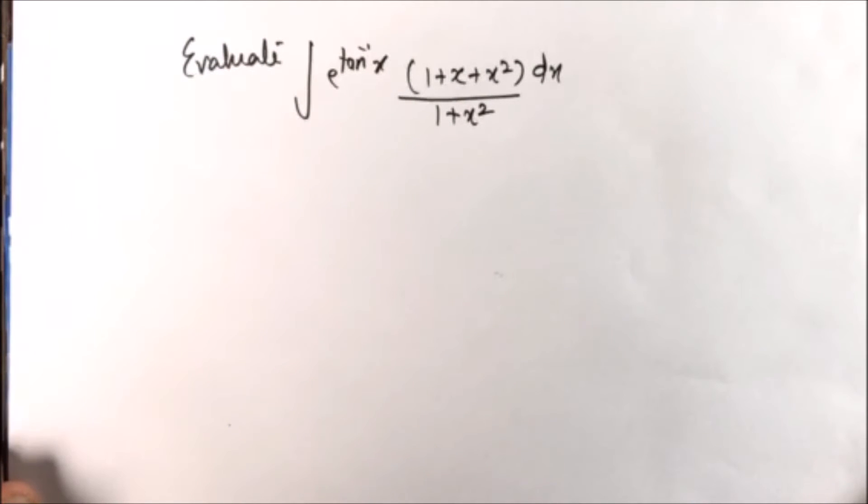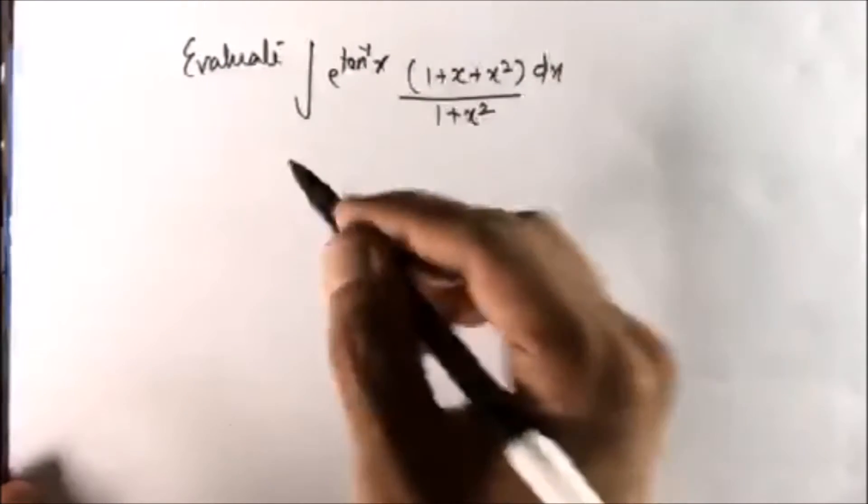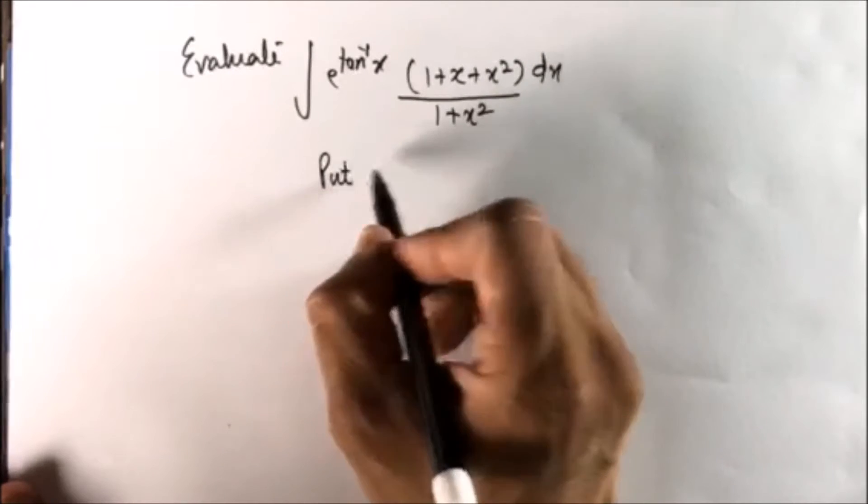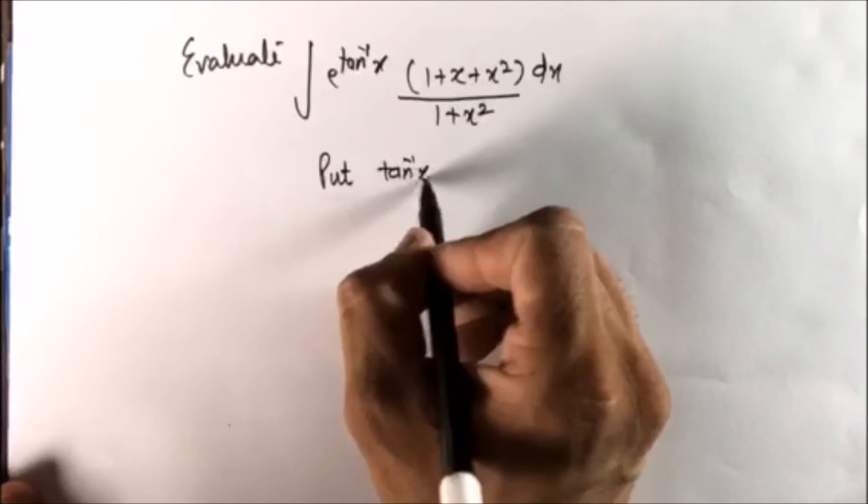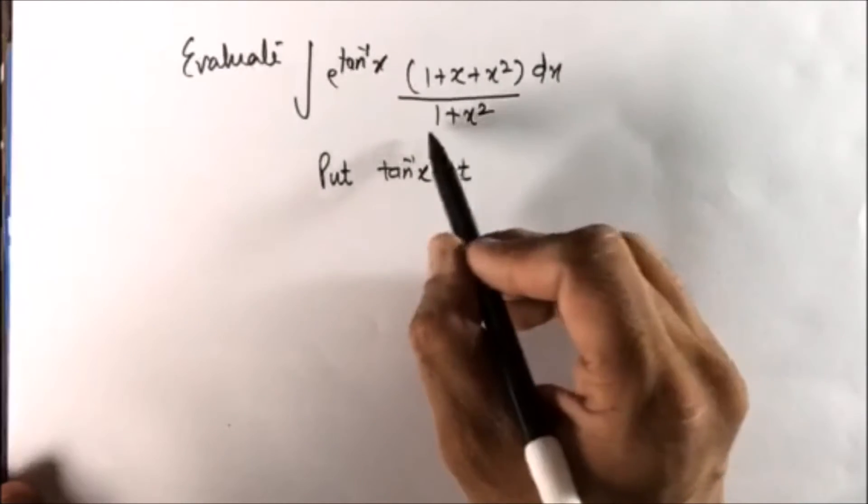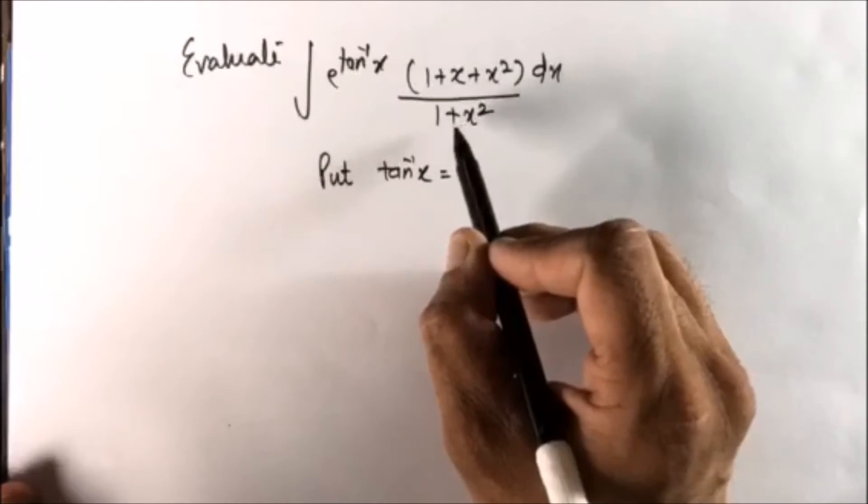Now if we see the question, the question clearly demands the substitution of tan inverse of x. So we should be putting tan inverse of x is equal to t because its derivative is present in the denominator if you can see.